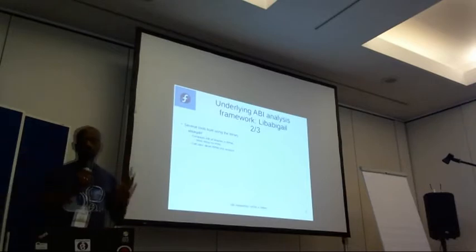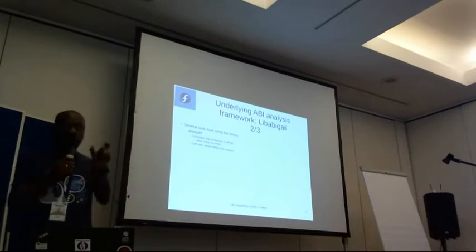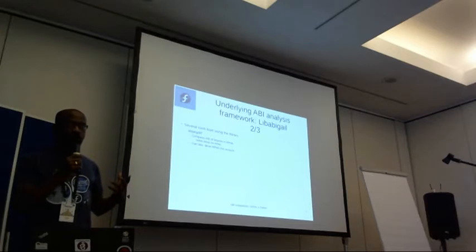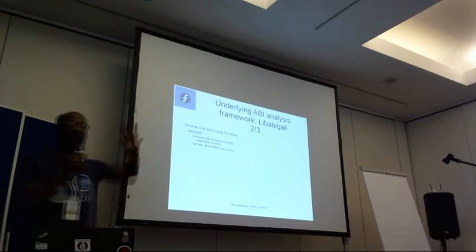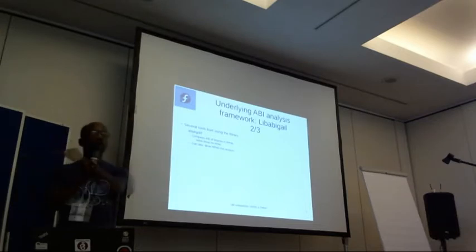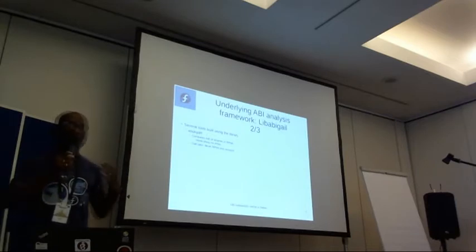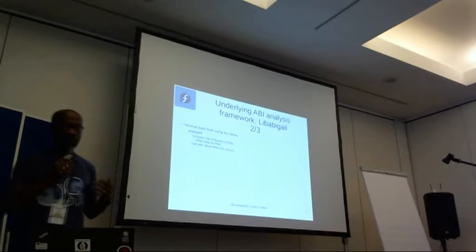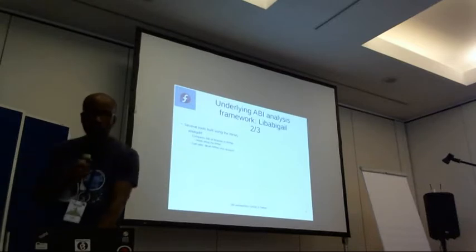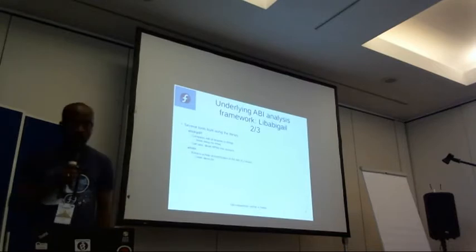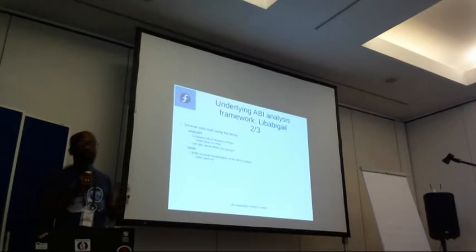We need the DEVEL RPMs. Once we have that, we auto-generate suppression specifications saying that whatever is not in the public header files, we don't want to see its reports. This is how we integrate all this in the pipeline to reduce noise in the final reports.